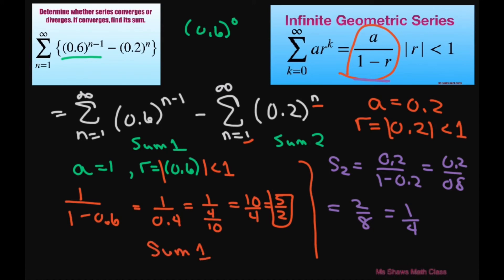So basically all we're going to do is subtract those two. So we're going to get sum 1 minus sum 2, which equals 5 halves minus 1 fourth, which is going to equal 10 minus 1 divided by 4, and that's going to equal 9 fourths. So our sum equals 9 divided by 4.